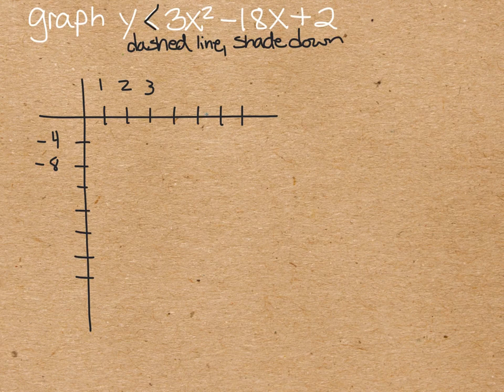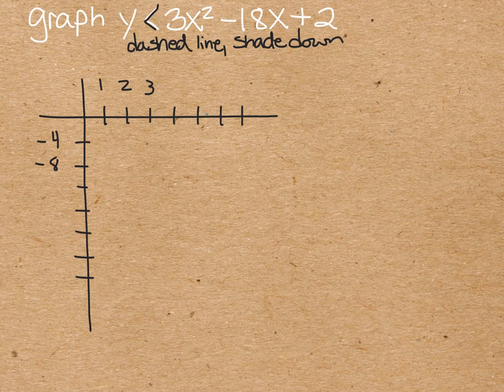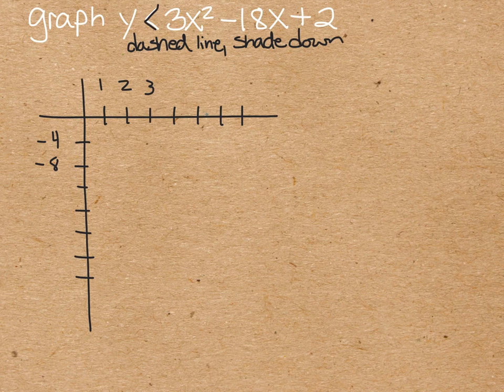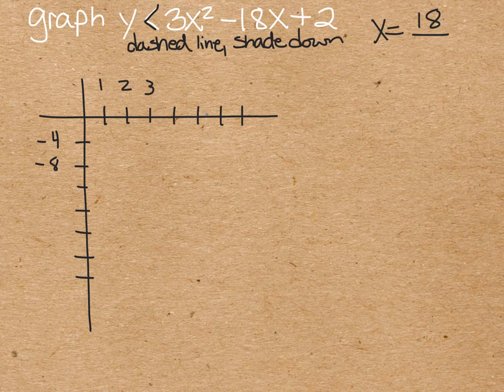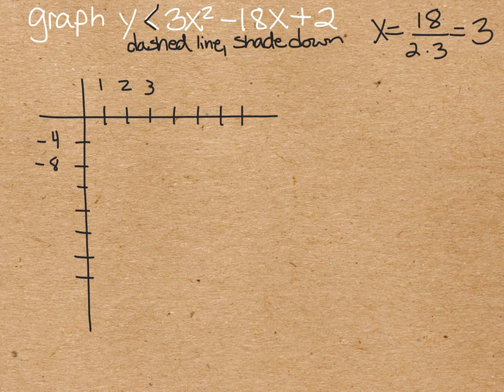Okay, so I've set up our grid for us to graph this. Remember, we need to find the axis of symmetry. So negative b would be positive 18 divided by 2a, 2 times 3. 18 divided by 6 is 3. So our axis of symmetry is through here.